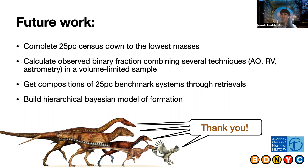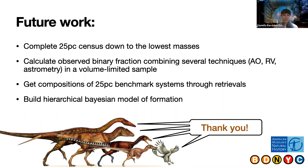We can also get compositions of the 25 parsec benchmark systems through atmospheric retrievals, which we're just starting to work on for brown dwarfs, in order to understand whether we see a trend with the primary star — whether we can say with enough precision that this object formed simultaneously with the star or later. Based on all these pieces, we can eventually build a hierarchical Bayesian model of formation where we combine limited information from different hints that formation mechanisms have left us, pulling different pieces of information into one complete model. With that, I'll take any questions and thanks again for your attention.